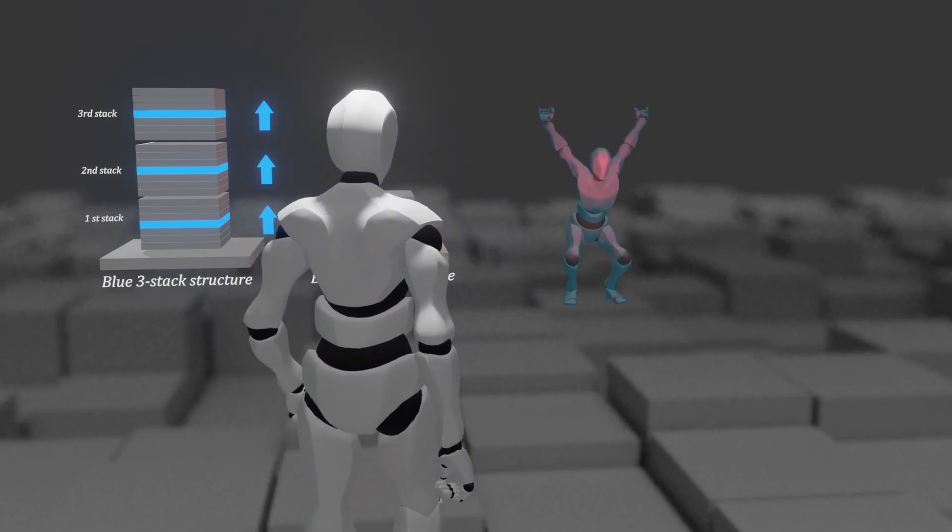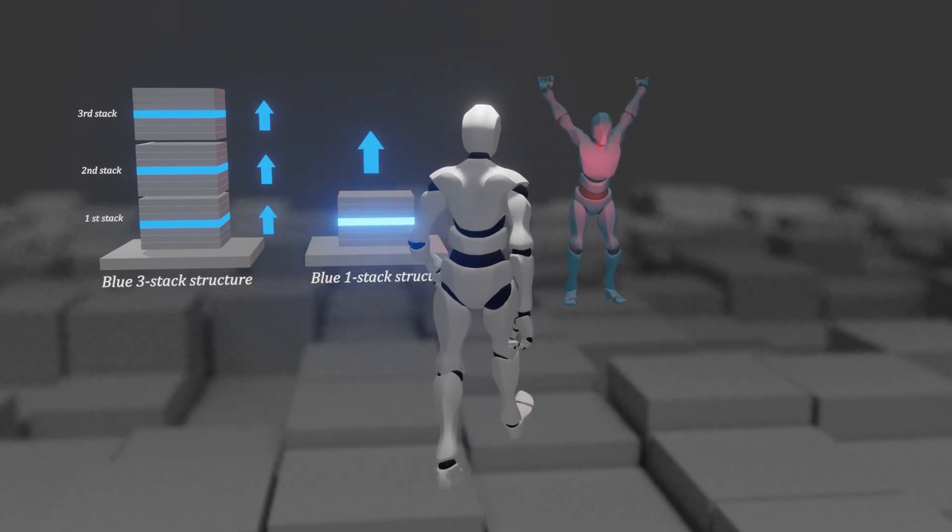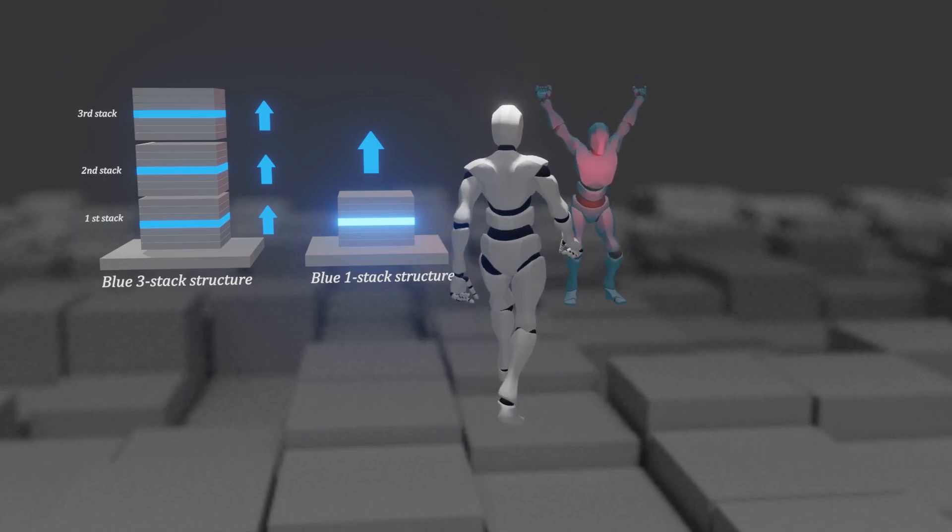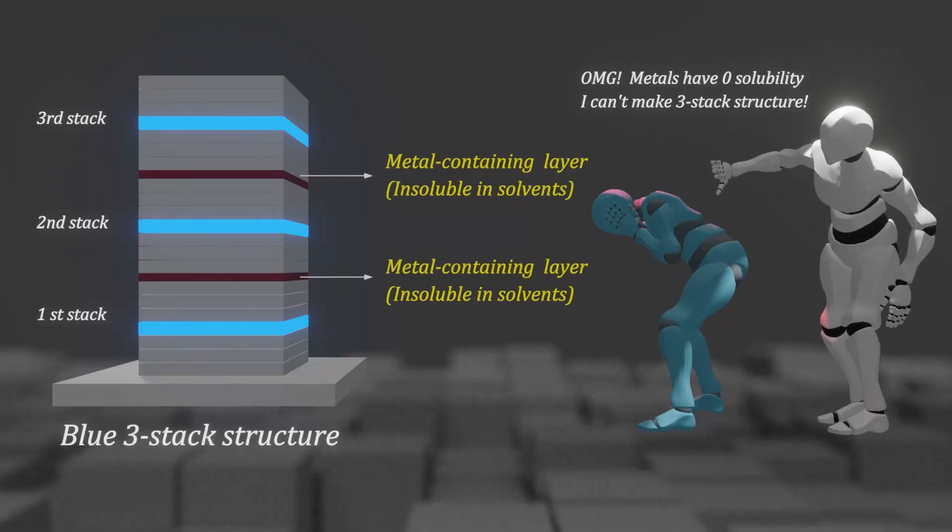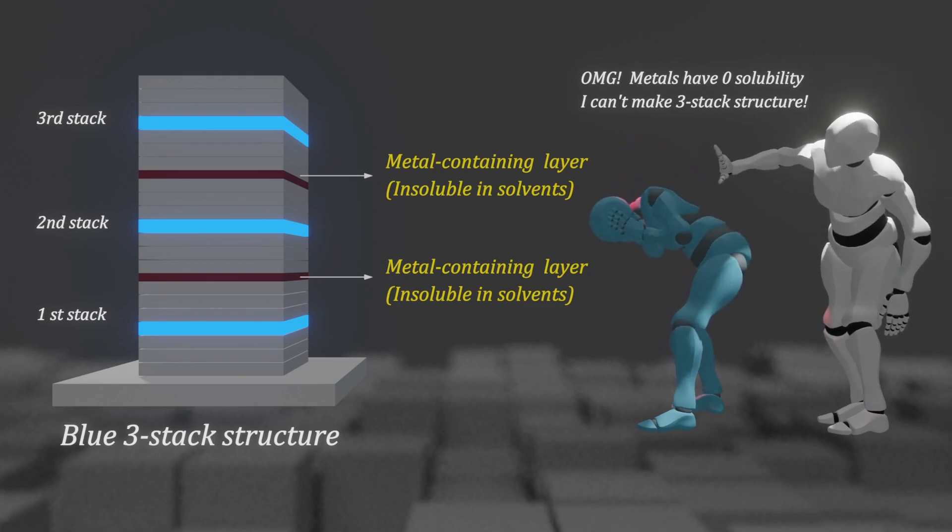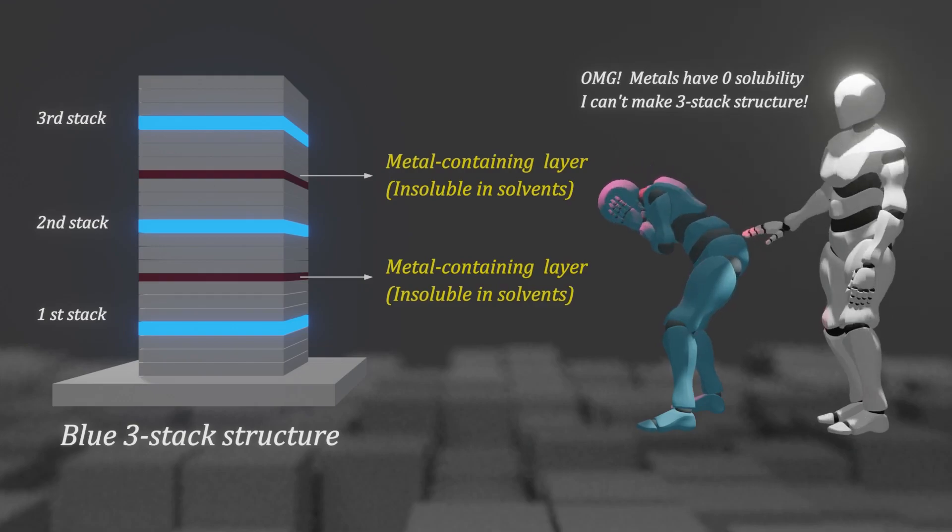However, while the deposition method can freely increase the number of stacks when forming OLED devices, the printing method unfortunately can make only a single stack. The reason is that an intermediate electrode made of metal must be formed between each stack, and such a process cannot be performed because the metallic materials are not soluble in solution.